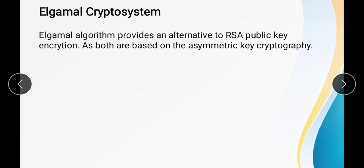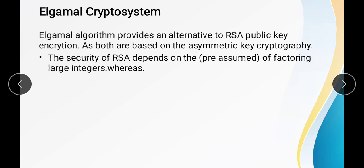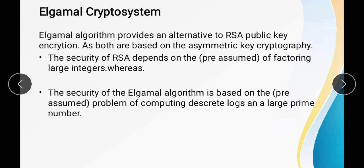ElGamal provides an alternative to RSA public key encryption, as both are based on asymmetric key cryptography. The security of RSA depends on the assumed difficulty of factoring large integers, whereas the security of the ElGamal algorithm is based on the assumed difficulty of computing the discrete logarithm in a large prime number.